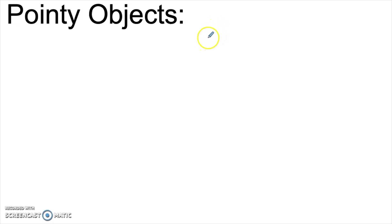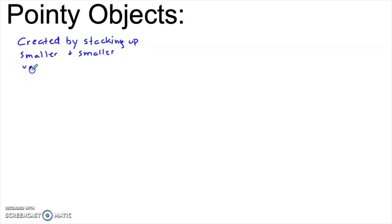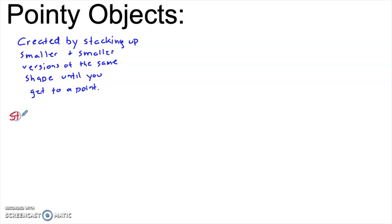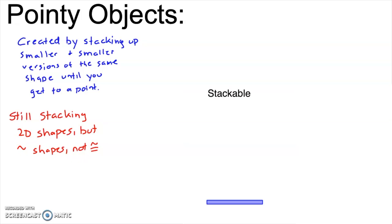In my stackable objects video, I talked about objects that you create by choosing a two-dimensional shape and stacking congruent versions of that shape on top of each other. The way you create a pointy object is you start with a two-dimensional shape, and you stack up smaller and smaller versions of that shape until you get to a point. Importantly, we are still stacking up two-dimensional shapes, but we're stacking up similar shapes, not congruent ones. Let me try to give you a visual of what I'm talking about.